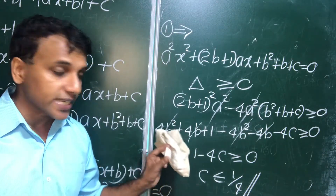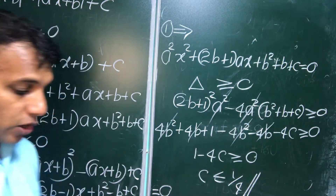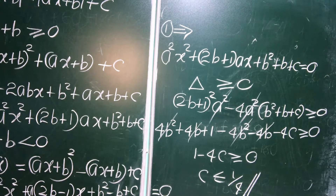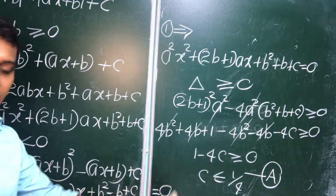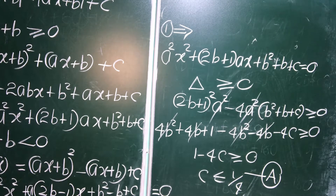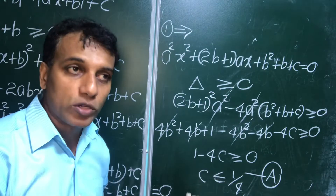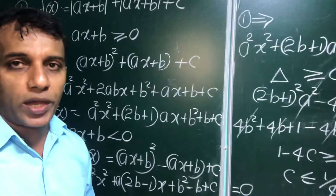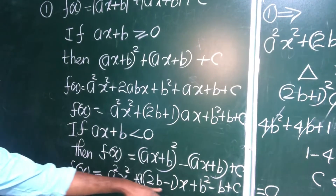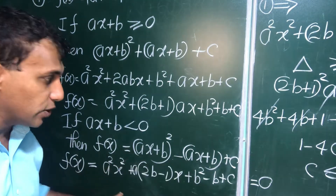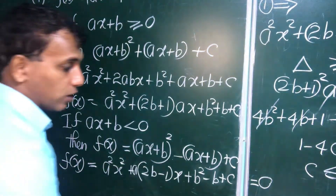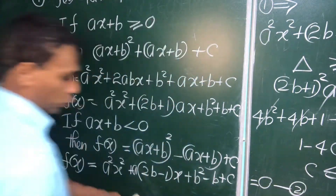So for the first equation to have real roots, c must be less than or equal to 1/4. Call this inequality A. Now we check what happens for the second quadratic equation — what is the range of c? That gives us inequality B.